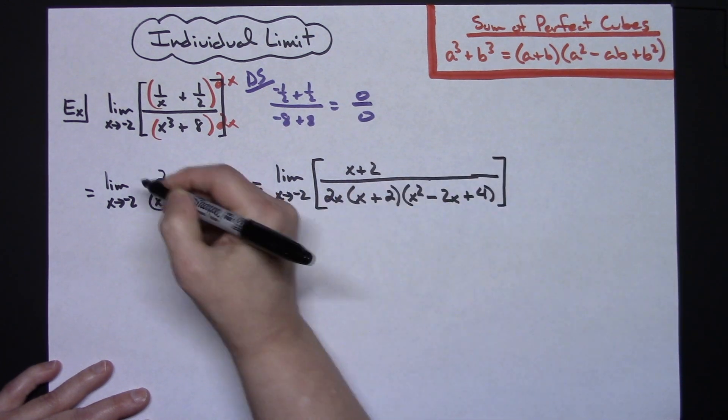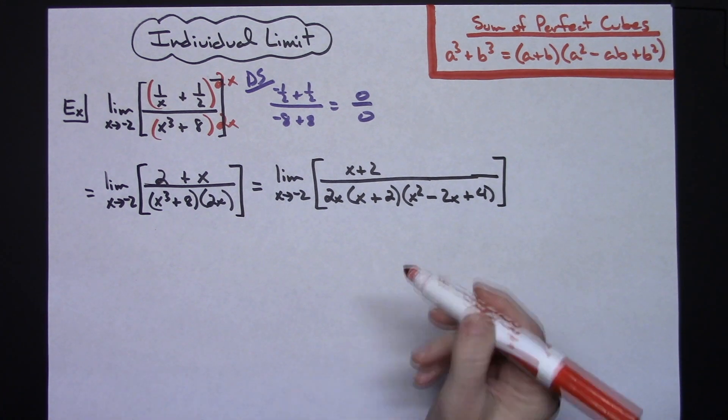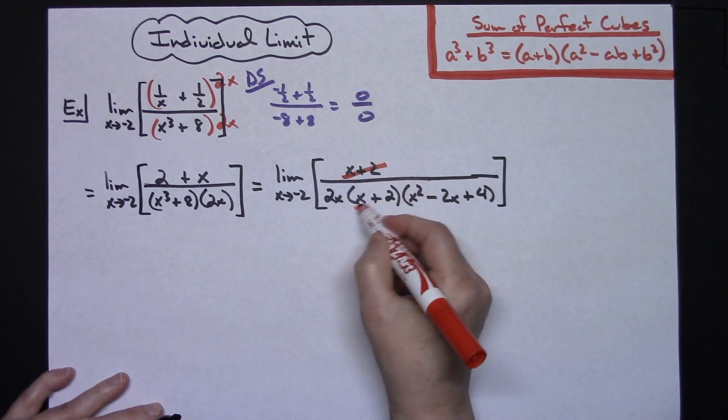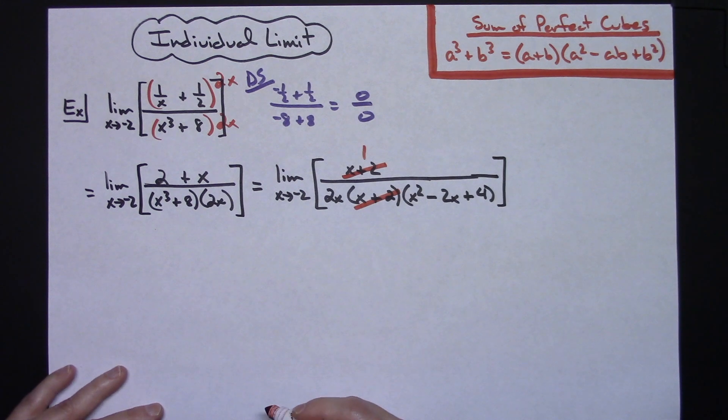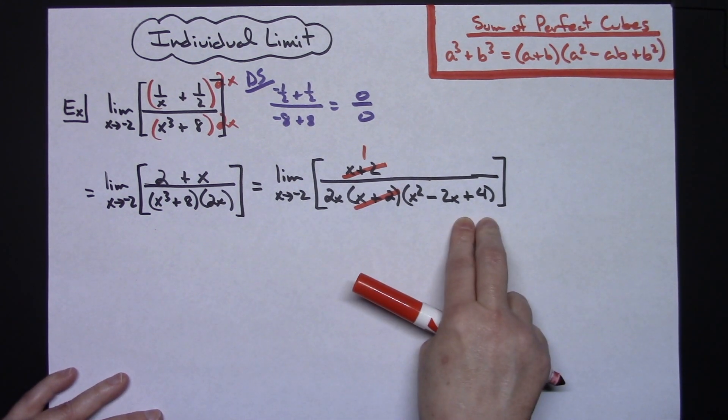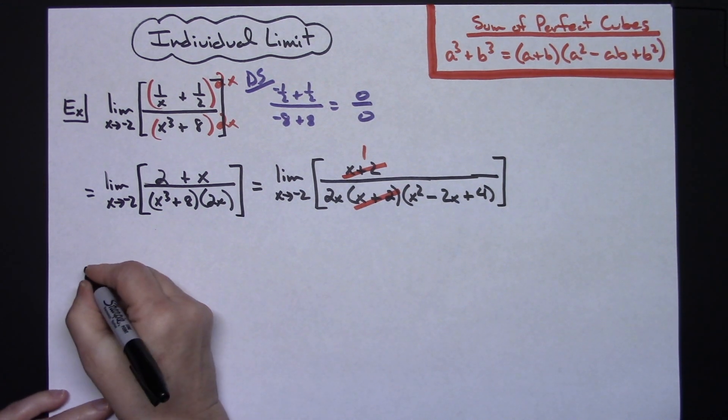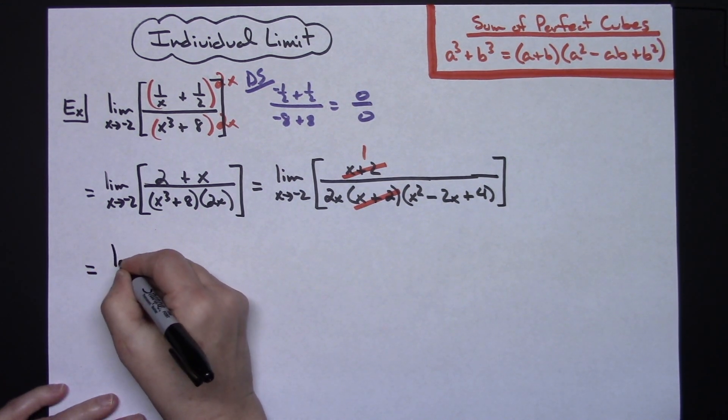Taking the limit of all of that—keep those square brackets in there. Now from here hopefully you see that you can cross out those x plus 2s. That's going to leave you with a 1 in the numerator there. And then from here looks like I'm going to probably be able to do just a direct substitution.